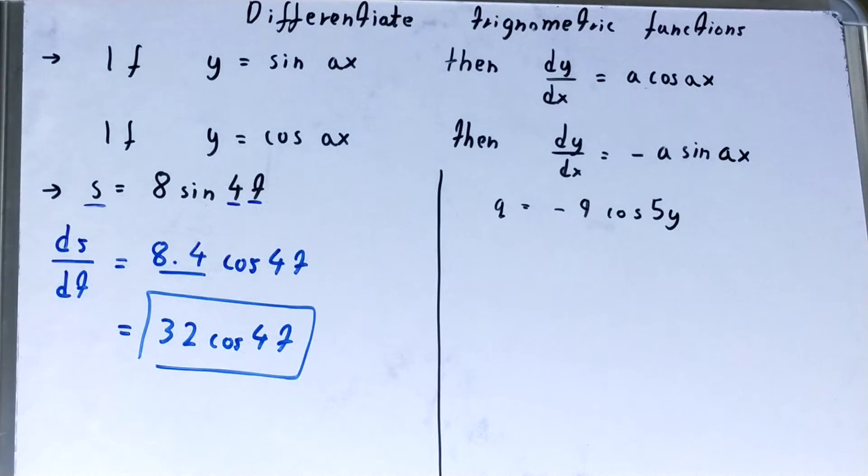And further on, if we multiply 8 times 4 is 32, cos 4t will be the answer.